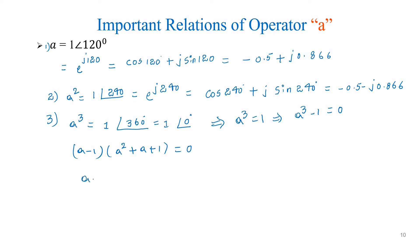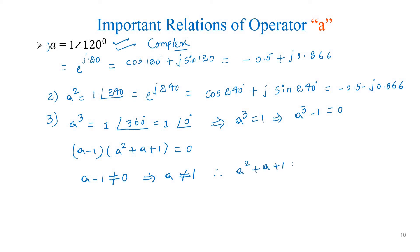Now A − 1 cannot be equal to zero — why? Because A is not equal to 1. Operator A is a complex number, represented as 1∠120°, and it cannot be equal to the real number 1. Therefore A² + A + 1 must be equal to 0. This is one of the important relations that we need. So the fourth relation is: A² + A + 1 = 0.